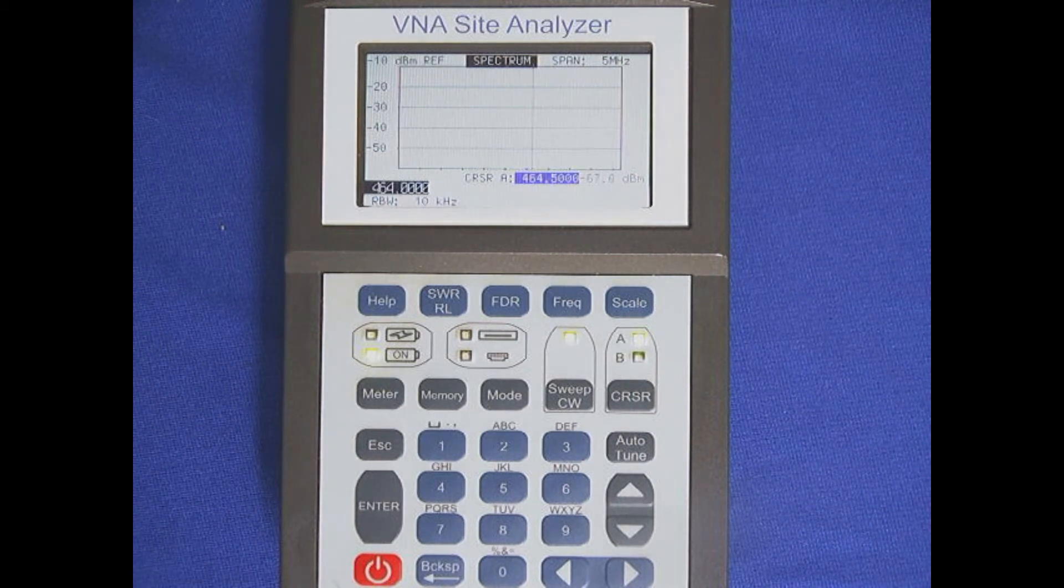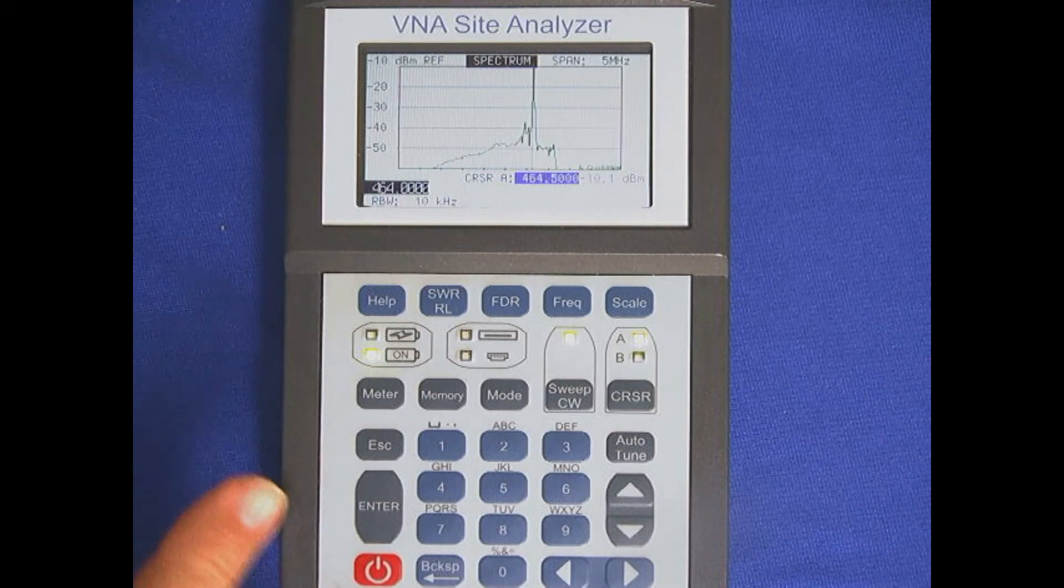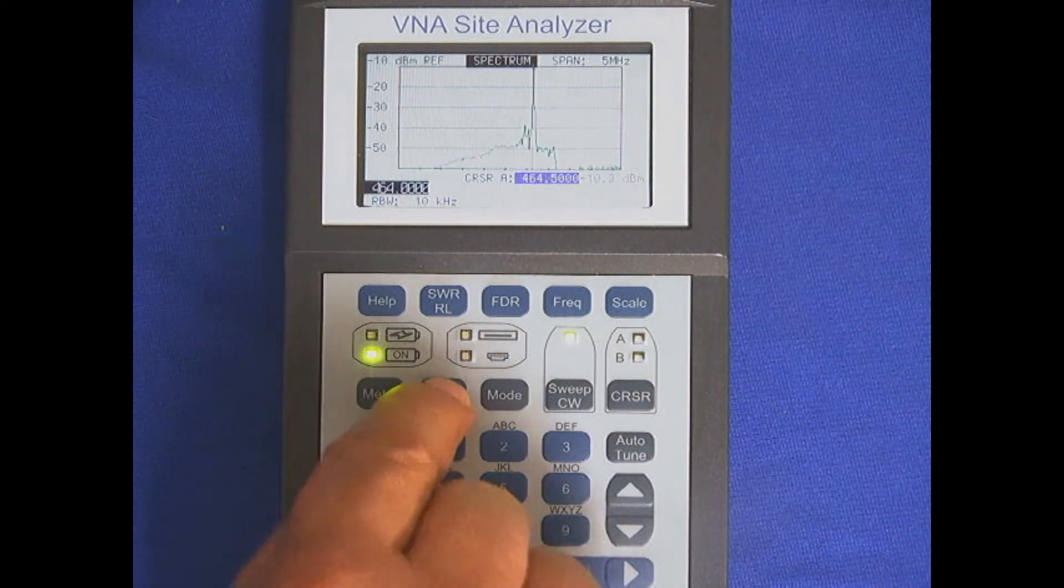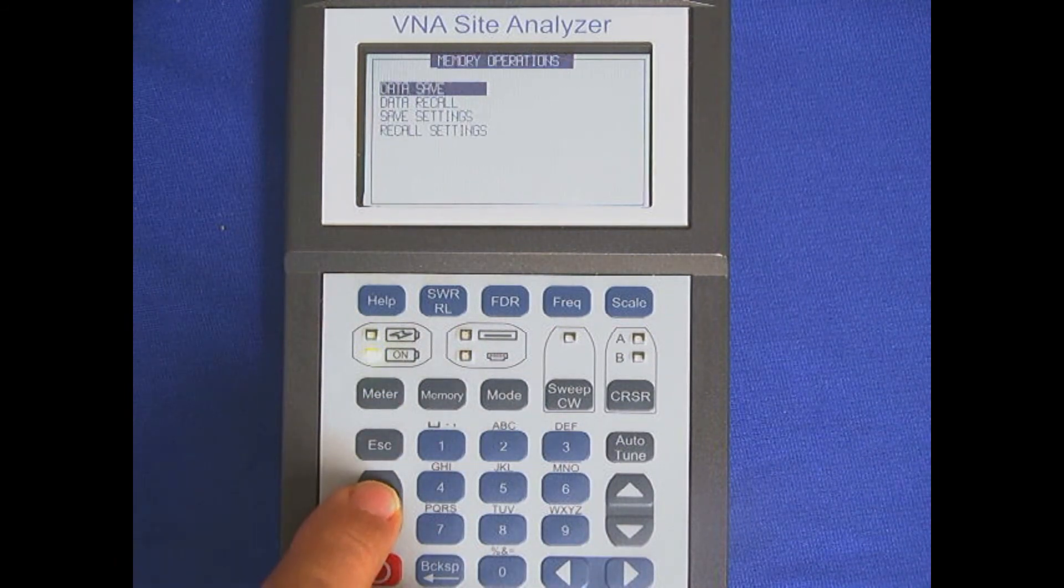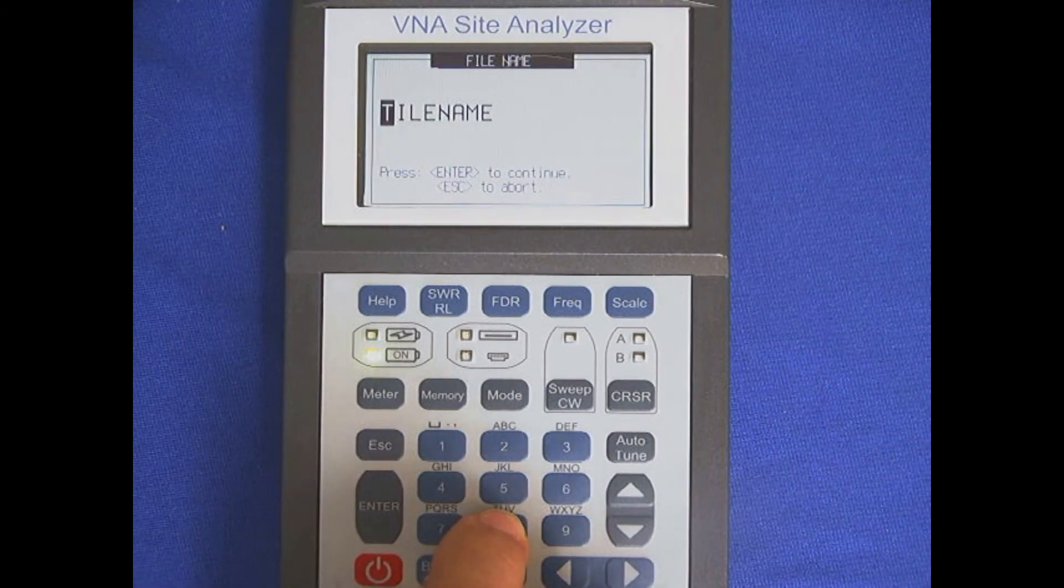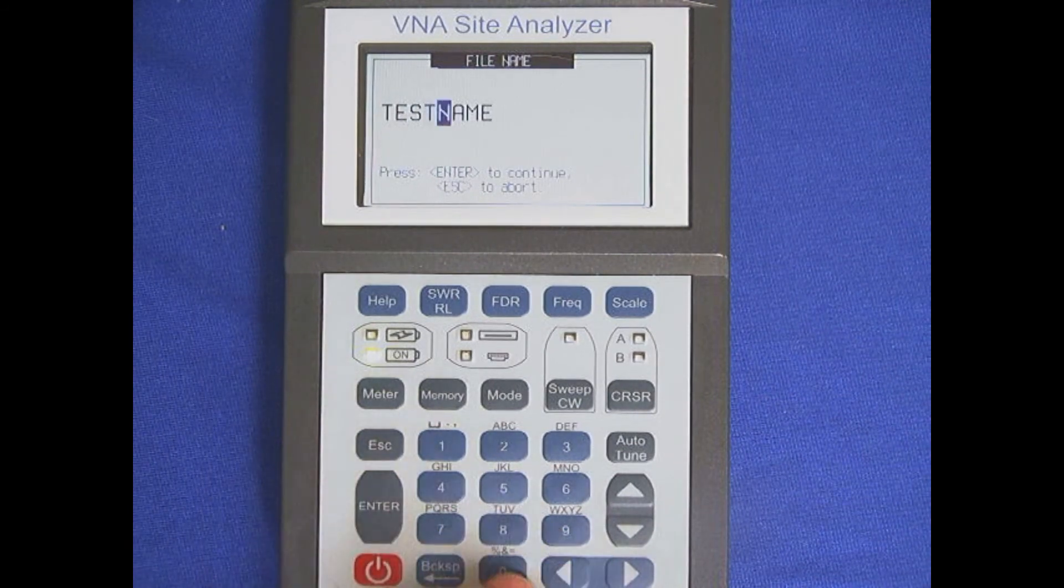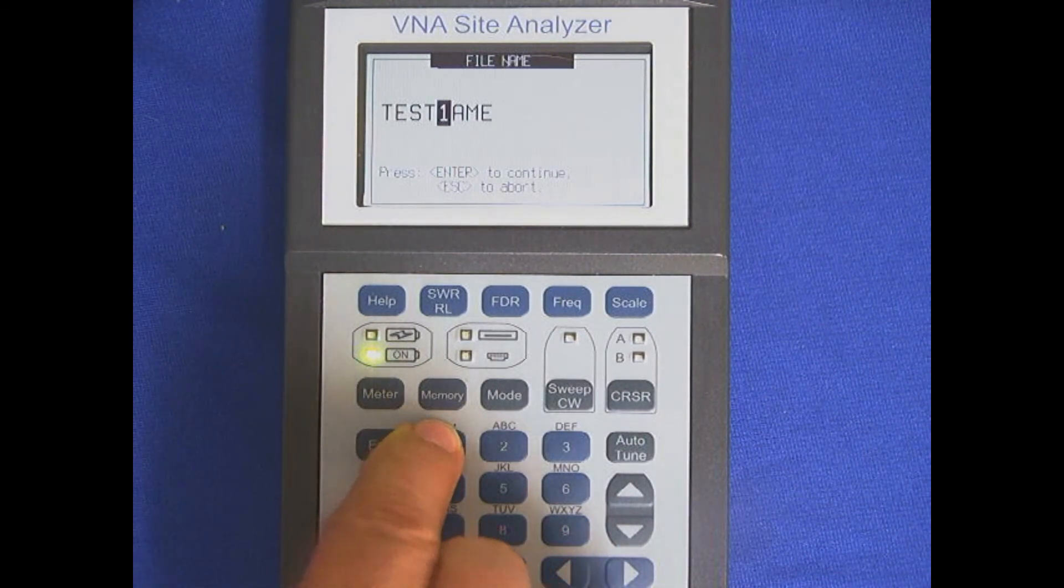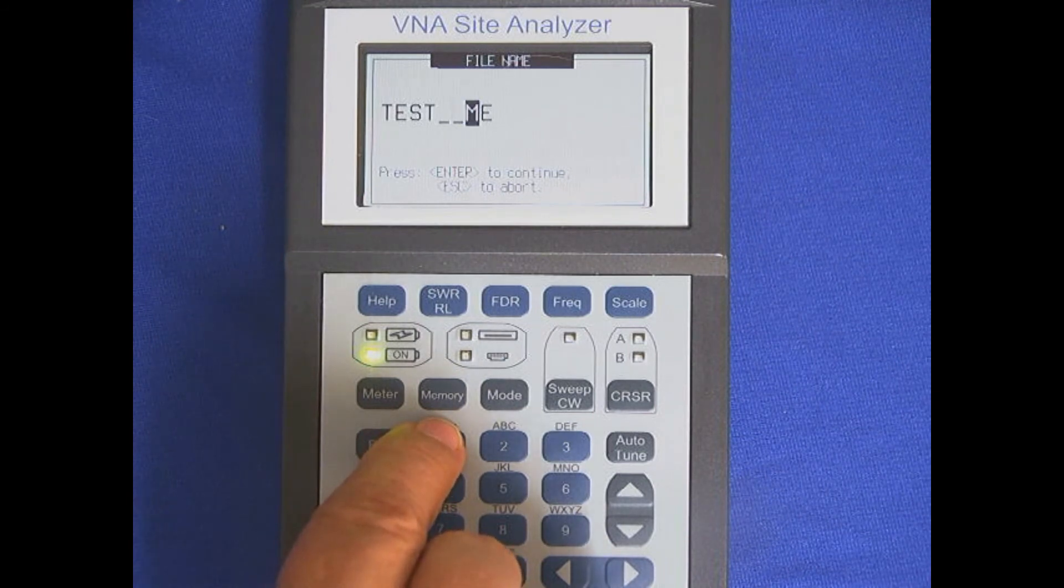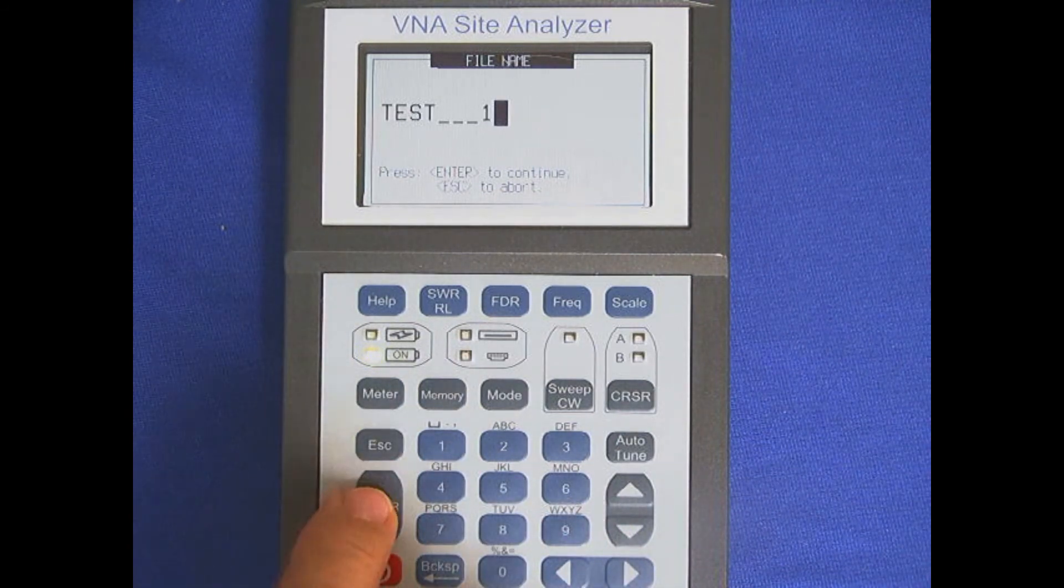Once you find the frequency of interest or whatever you're looking for, you're capable of capturing that. If I want to capture that, all I have to do is touch memory, data save here, and name the file using an old style cell phone keypad. So I just go in here and name it Test or whatever I'd like to name it. And it'll save that information along with that signal level. We'll call that one Test 1. Hit Enter. And now it'll save that signal.